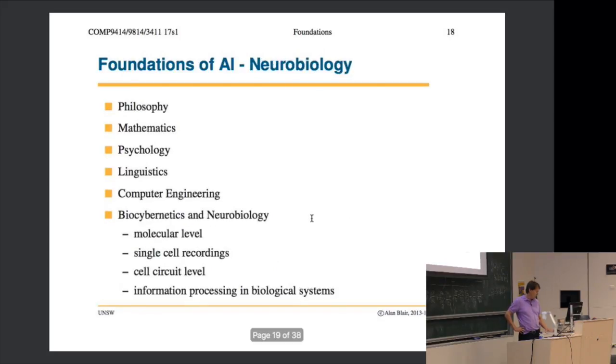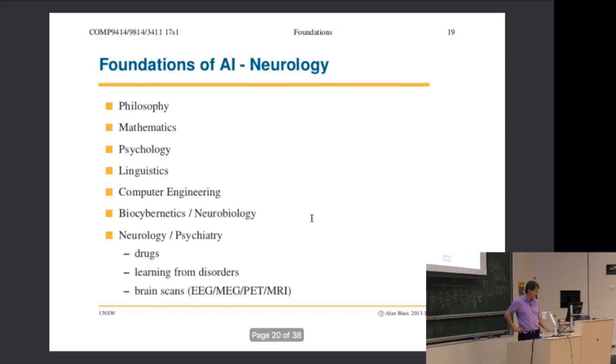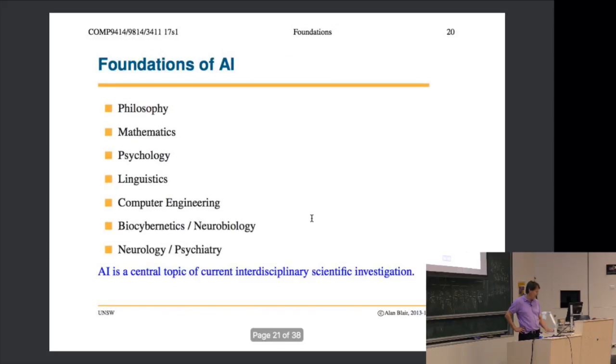There's neurobiology and bio-cybernetics, psychiatry - all these different areas. This historical background is not examinable material, but I want to convey the idea that AI is very interdisciplinary, a multidisciplinary or interdisciplinary endeavor.